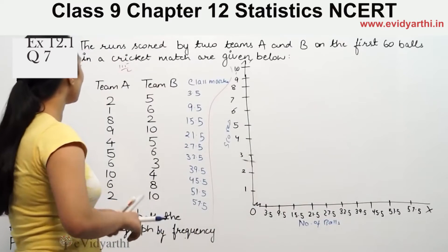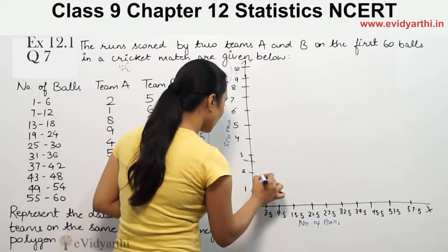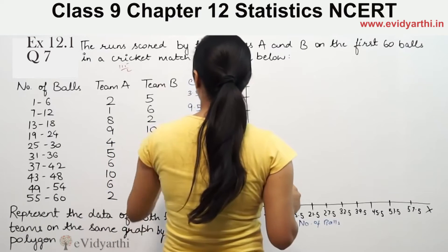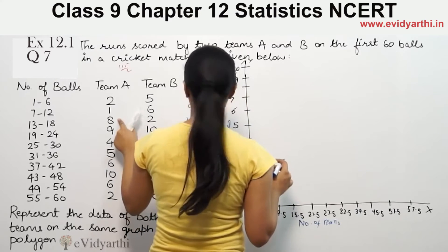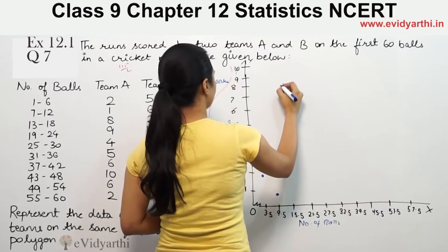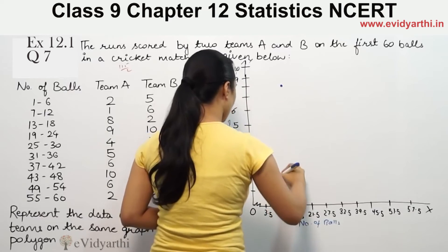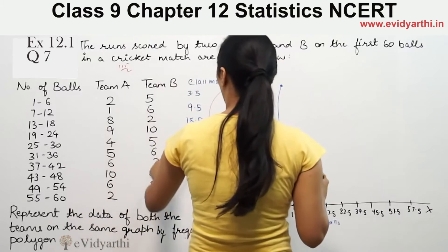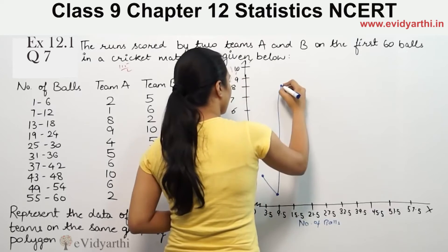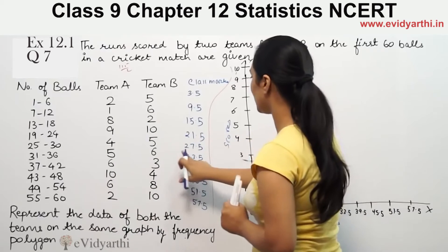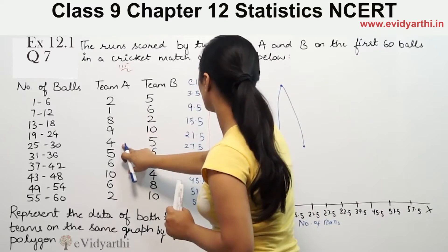Now let's plot the data for Team A. At 3.5, frequency is 2. Then at 9.5, frequency is 1. Then at 15.5, frequency is 8. Then at 21.5, frequency is 9. Then at 27.5, frequency is 4.